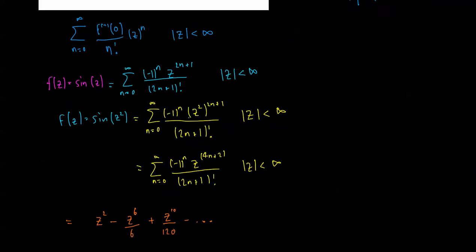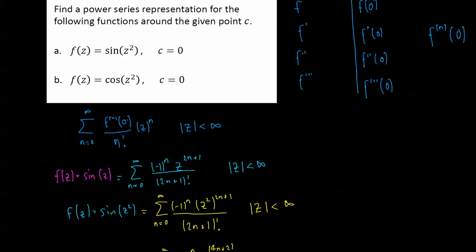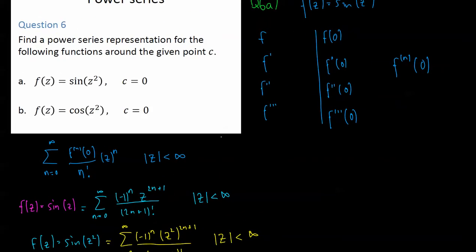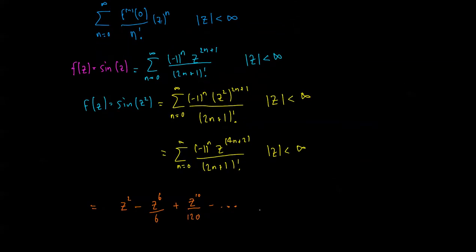Okay, so that is the power series for z squared, and that is the easiest way to go about a question like this. So if in an exam you are asked to find the power series of this, don't waste your time finding all these derivatives. Jump straight to the Taylor's, the known series, which is on your formula sheet, and substitute in whatever you have here, in this case it was z squared. Okay, good luck.